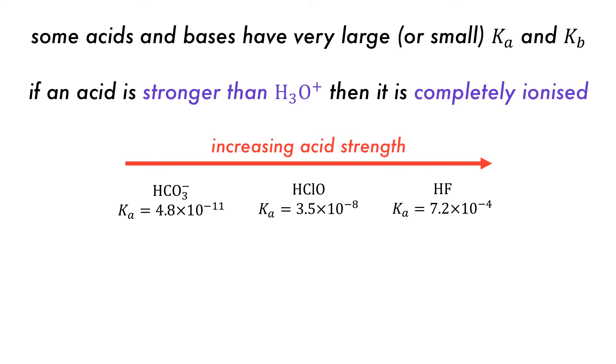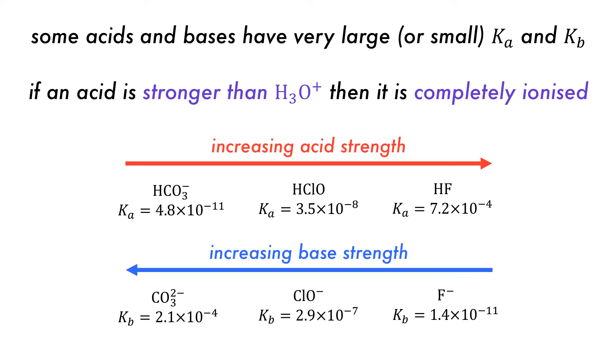HF is stronger than hypochlorous acid, which is stronger than bicarbonate. Consequently, their conjugate bases have the opposite trend, with the weakest being F- and the strongest being carbonate. This confirms the previous statement that when Ka is large, Kb should be small, and vice versa.